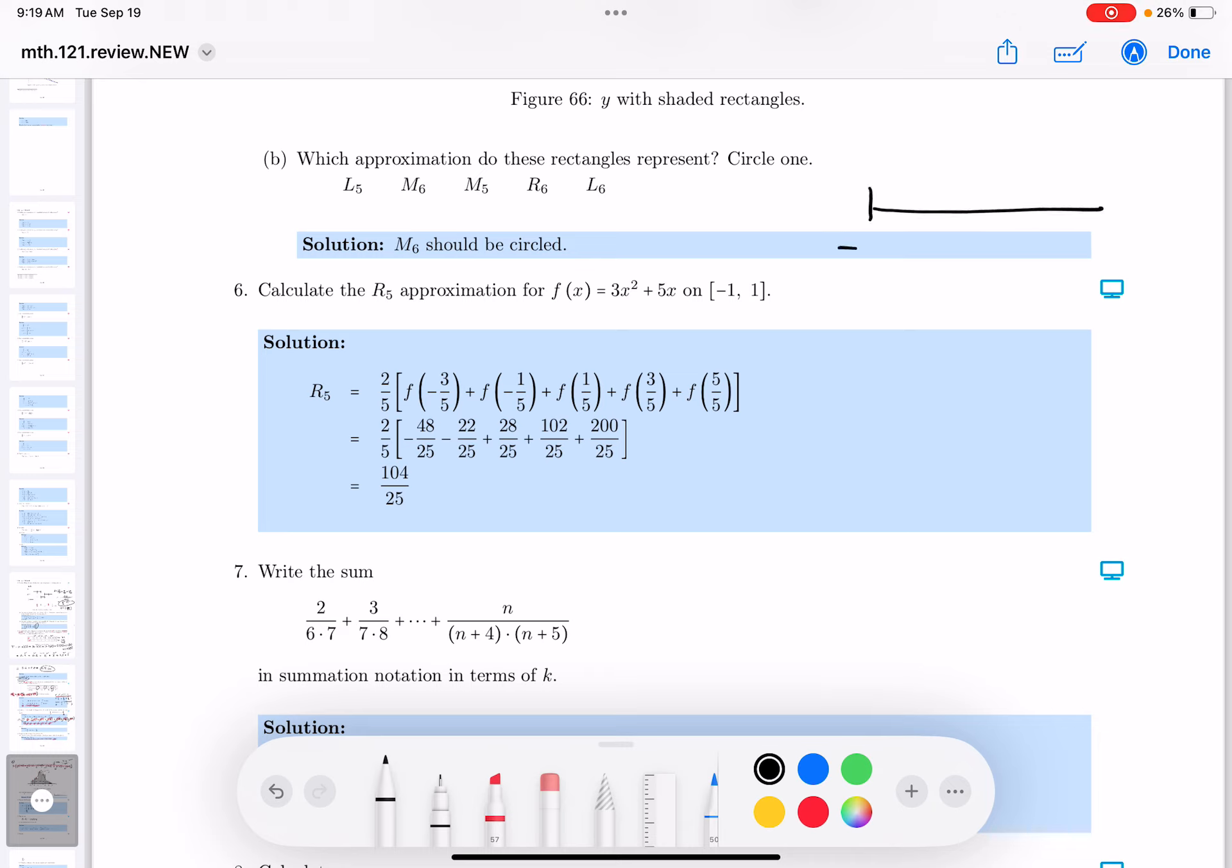It starts at minus 1, and it goes up to 1. And the length of that's going to be, well, that's just 2 units, right? And you're dividing into 5 equal pieces. So it's going to be 2 fifths.